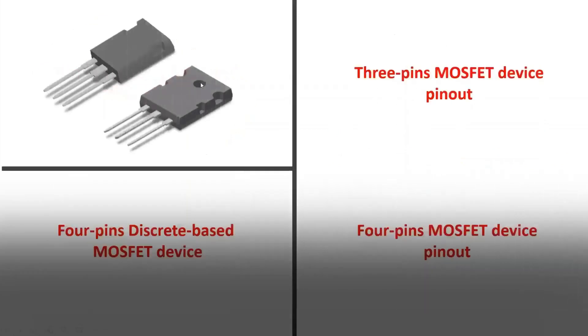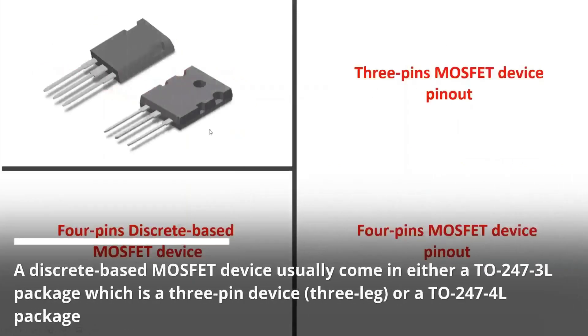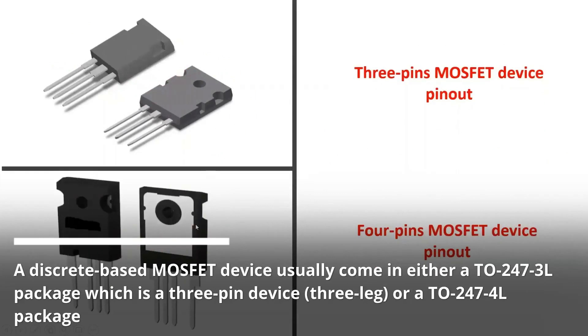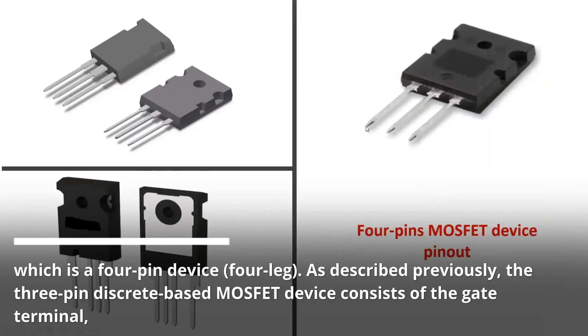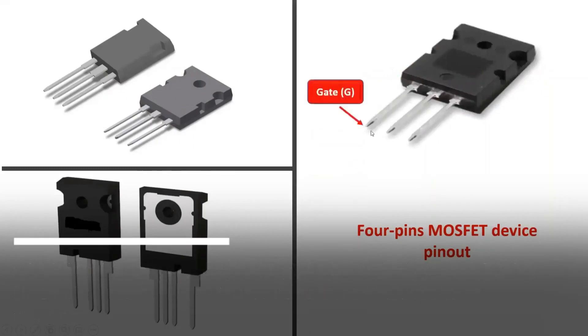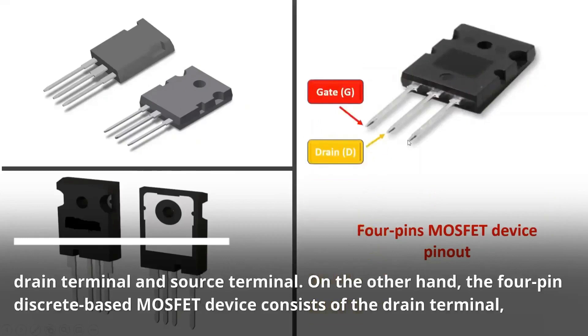A discrete-based MOSFET device usually come in either a TO-247-3L package which is a 3-pin device or a TO-247-4L package which is a 4-pin device. As described previously, the three-pin discrete-based MOSFET device consists of the gate terminal, drain terminal, and source terminal.